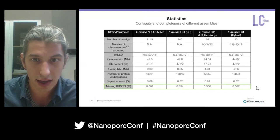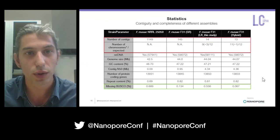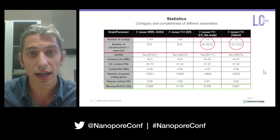Another important parameter is the number of contigs. As we can see, the long-read-based assembly produces a very contiguous assembly compared with the short-read-based one, and the long-read-based assembly allows us to define a specific number of chromosomes.